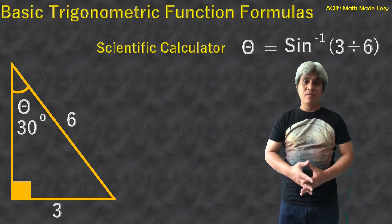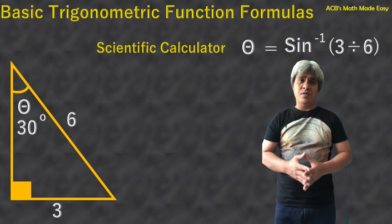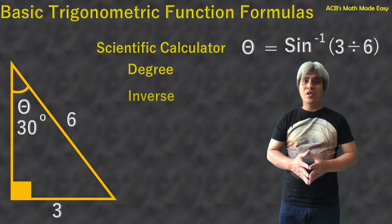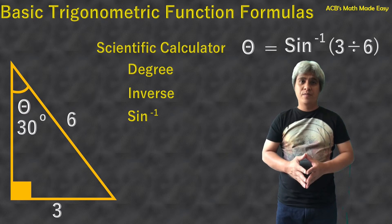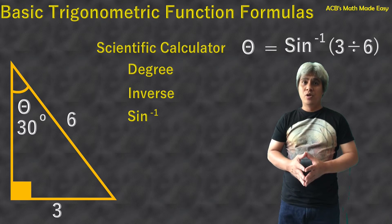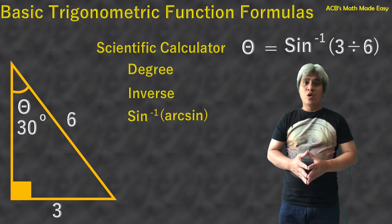This was our example. To get the angle in the scientific calculator, it must be in degree mode. Make sure it is in degree mode or you will get a wrong answer. And after that, just click the inverse button — or for other calculators, press shift to show the inverse sign — and then click the inverse sign. I am going to demonstrate it to you.